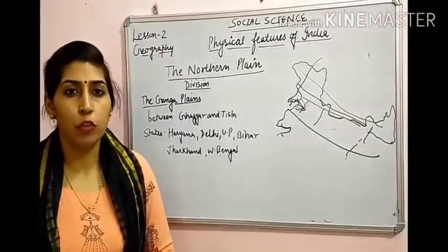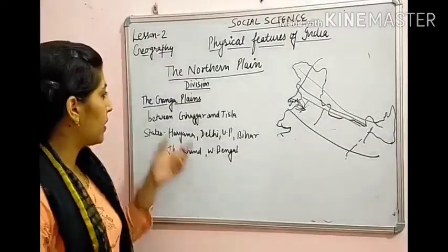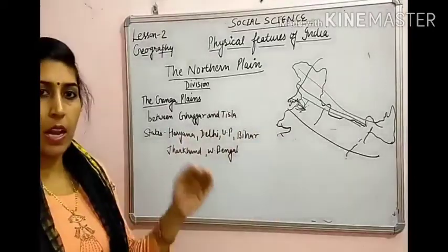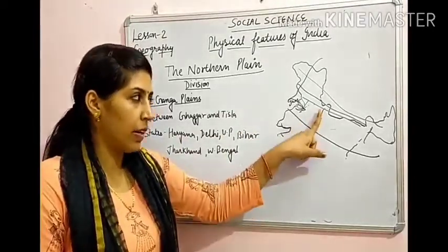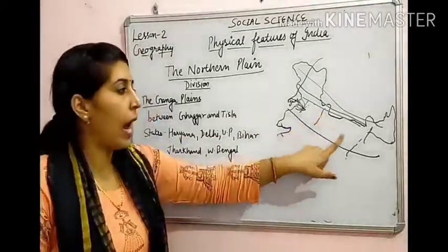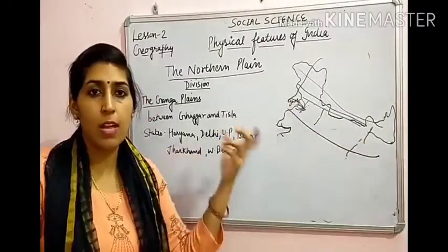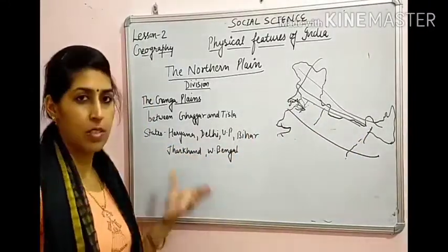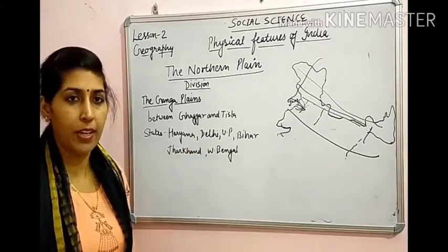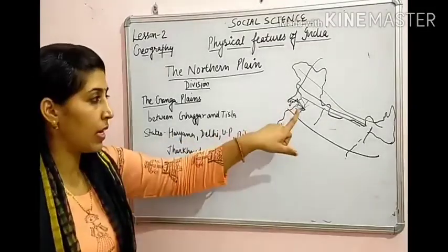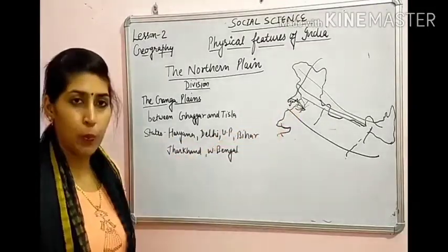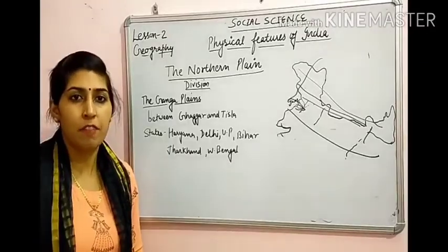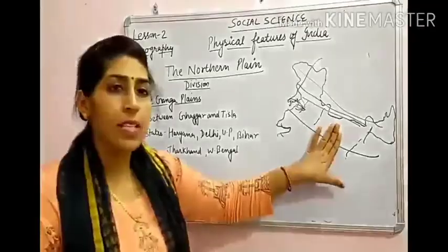The next part of the Northern Plain is the Ganga Plain. Ganga Plain lies between the river Ganga and the river Tista. यह river Haryana, Delhi, UP, Bihar, Jharkhand, और West Bengal — इन states को drain करती है। So this area is the Ganga Plain.